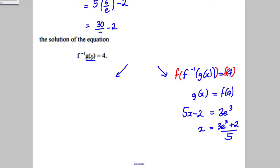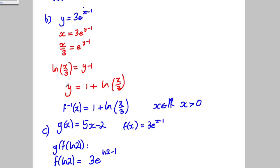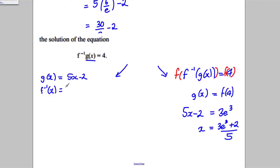Alternative is to put g(x) into the inverse function. Now remember g(x) equals 5x-2. Remember f^(-1)(x), we've worked that out. What did we say it was earlier? It's 1 + ln(x/3). So we're going to put g into this. So f^(-1)(g(x)) is going to be equal to 1 + ln((5x-2)/3). And we're going to make that equal 4.